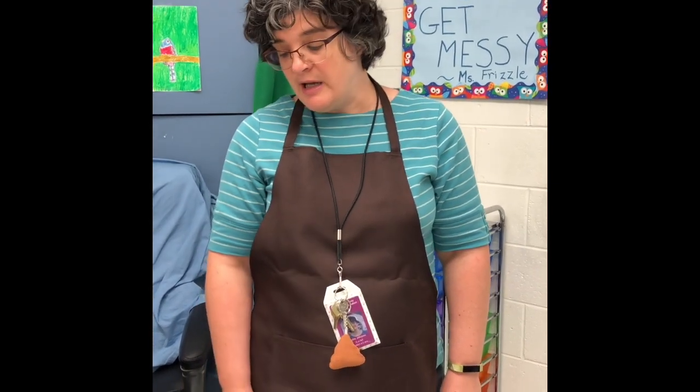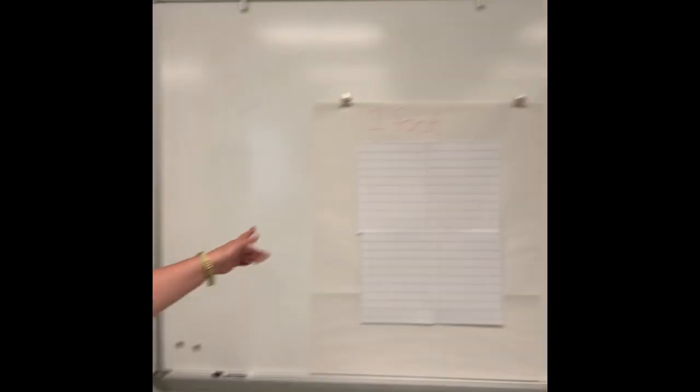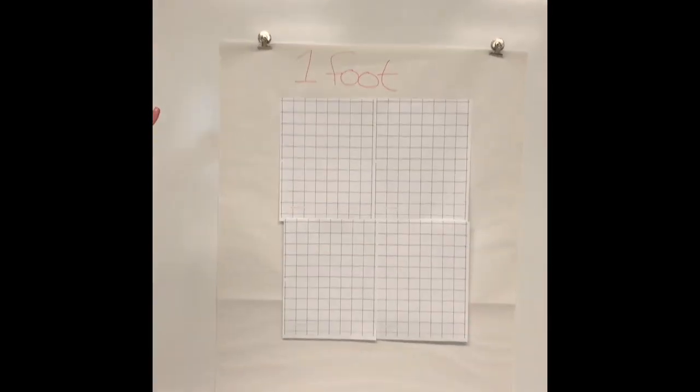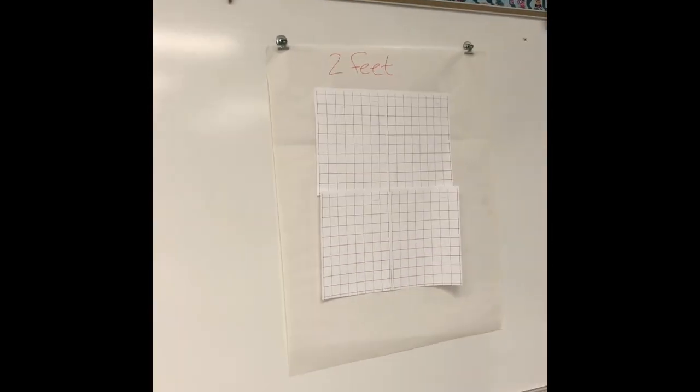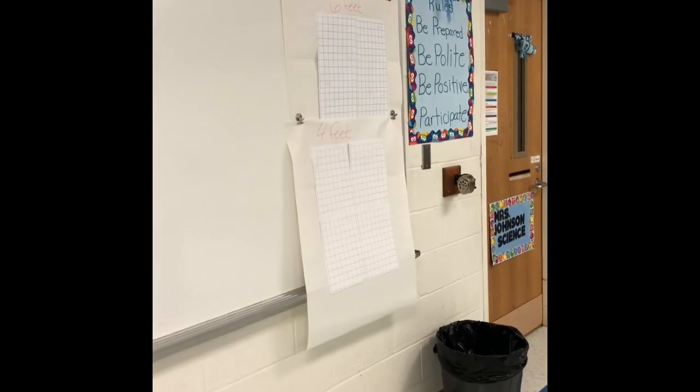This is also one of our first labs this year where we're going to be talking about the scientific method. We're going to start with the idea of the independent variable. The independent variable is the variable that is changed on purpose — it's what you manipulate. So in this experiment, what are we manipulating? One foot, two foot, four foot, six foot. So the independent variable is the distance.